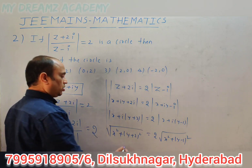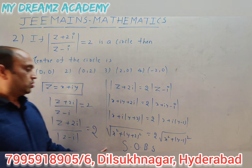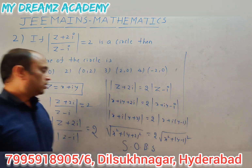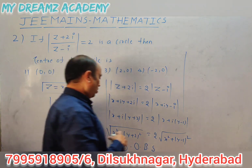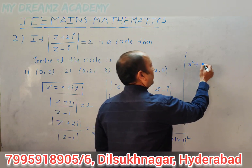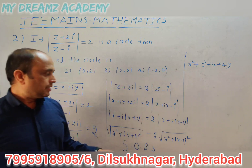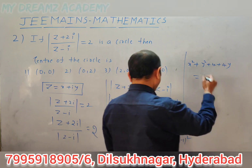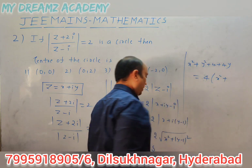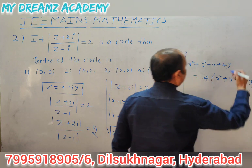Applying the modulus definition |x + iy| = √(x² + y²): √(x² + (y+2)²) = 2√(x² + (y-1)²). Now squaring both sides: x² + (y+2)² = 4[x² + (y-1)²].